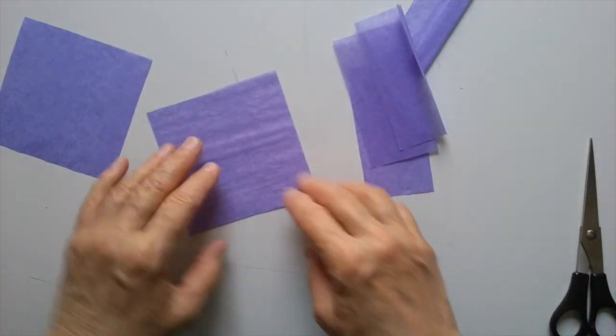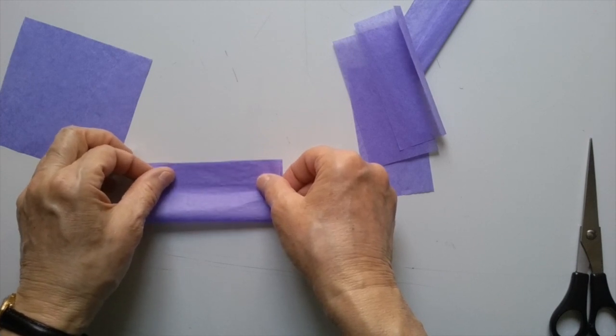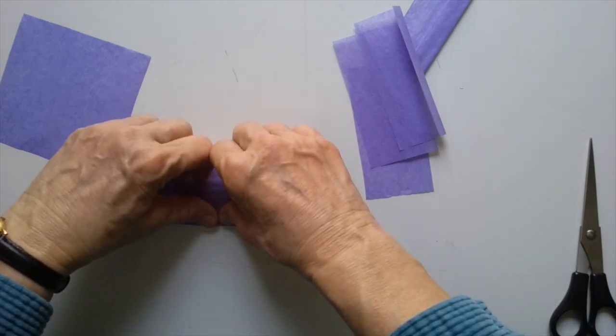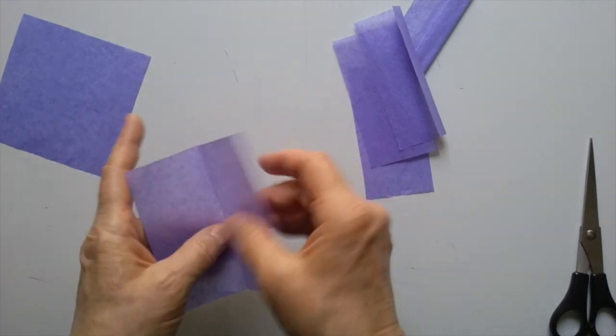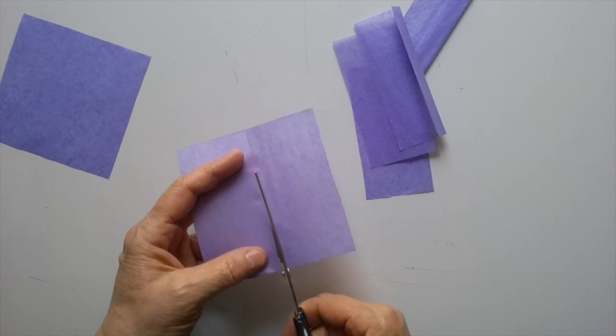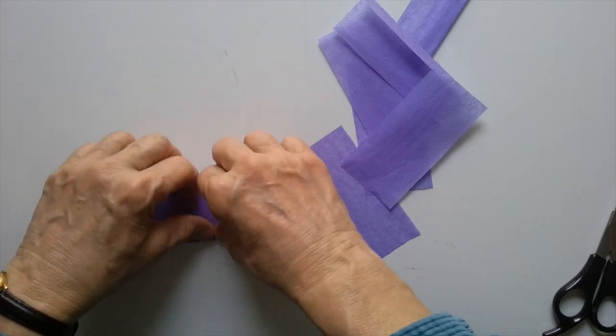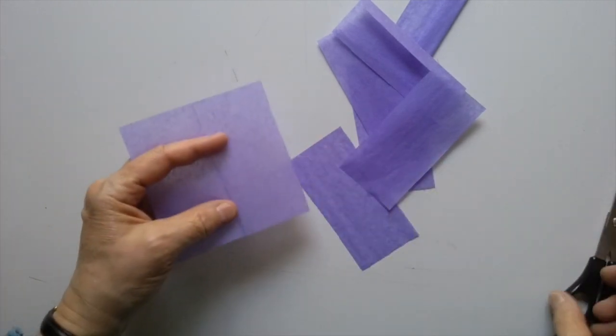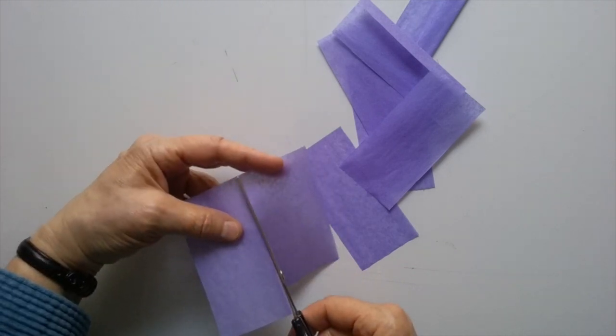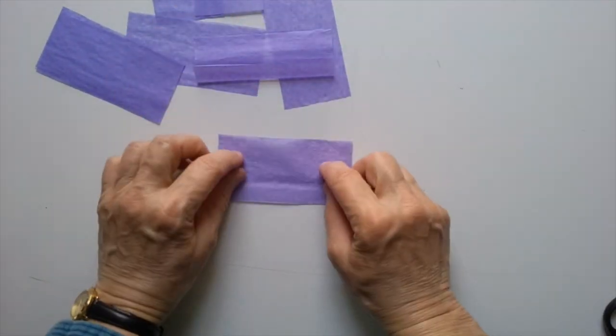And do this with all 4 squares until you have 8 pieces. There are lots of Waldorf star patterns out there. This is a pretty simple one. Again, it's not quite the simplest, but it's very simple. And again, I will put links to other patterns in the description. So if you are ambitious, you can try a more difficult one. Okay, here's our 8 rectangles.